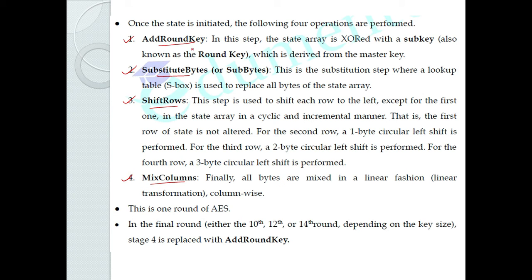In Add Round Key, the input is the plaintext, which is the state for the first round. The state is XORed with the sub-key, which is also known as the round key. For subsequent rounds, the state is the modified output from the previous round.